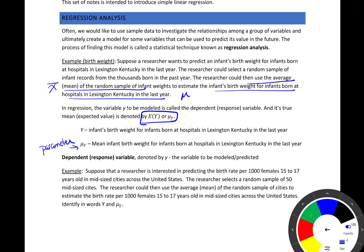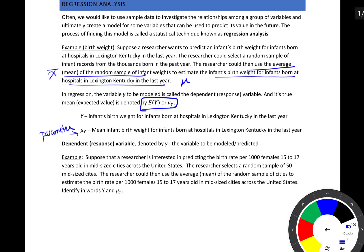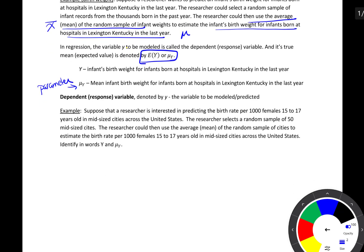The dependent or response variable is denoted by y, and that is going to be the variable that we want to model or predict. Here's another example: suppose a researcher is interested in predicting the birth rate per 1,000 females 15 to 17 years old in mid-sized cities across the United States. The researcher selects a random sample of 50 mid-sized cities and could then use the average of that sample to estimate the birth rate.